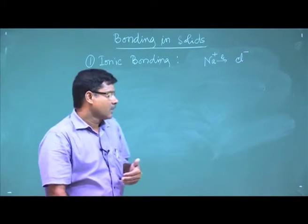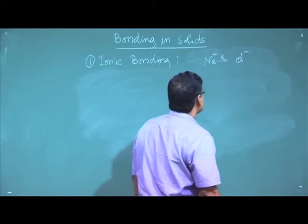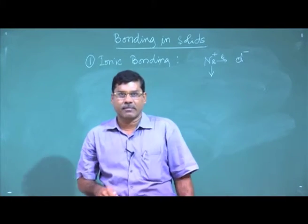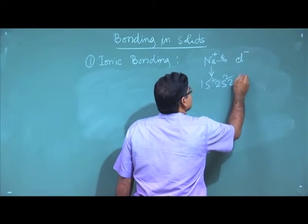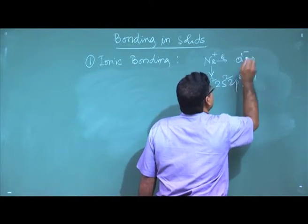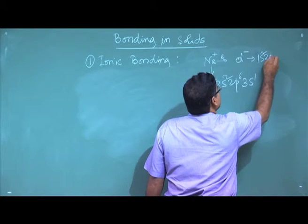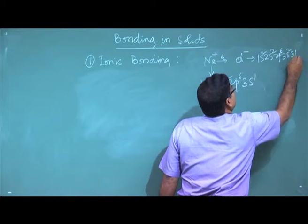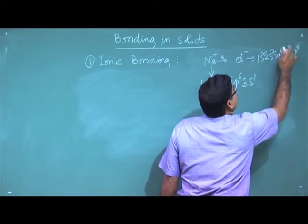Why does sodium want to give one electron and chlorine want to accept one electron? That is because of the electron configuration of these atoms. Sodium has 11 electrons with configuration 1s2, 2s2, 2p6, 3s1. Chlorine has configuration 1s2, 2s2, 2p6, 3s2, 3p5, giving 17 electrons total.